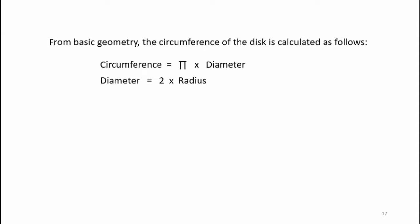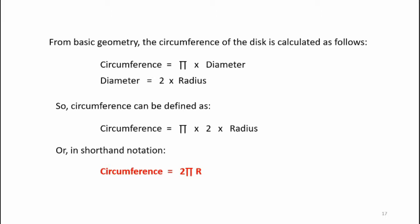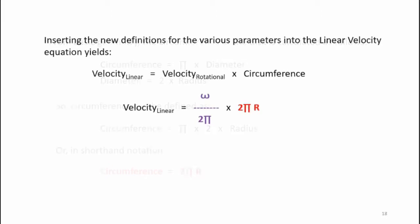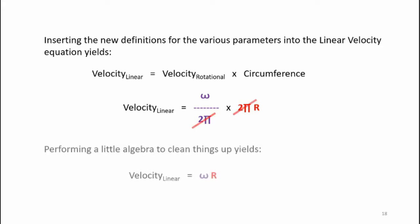Now, from basic geometry, the circumference of a disk is calculated as follows. Circumference is pi times diameter, and diameter is two times radius. So circumference equals pi times two times radius, or in shorthand, circumference is two pi r. Inserting these new definitions into the linear velocity equation yields velocity equals omega divided by two pi times two pi r. The two pi's cancel out, we perform a little bit of algebra, and you can see that velocity equals omega r.